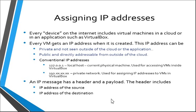When I say every device on the Internet, that means things like virtual machines in a cloud or inside an application such as VirtualBox. It also means what's called IoT — Internet of Things — so things like your refrigerator and your toaster. If they're Internet-enabled, they have IP addresses. For our purposes, every virtual machine gets an IP address when it's created. These IP addresses can be private and not seen outside of the cloud, or they can be public and directly addressable from outside the cloud.